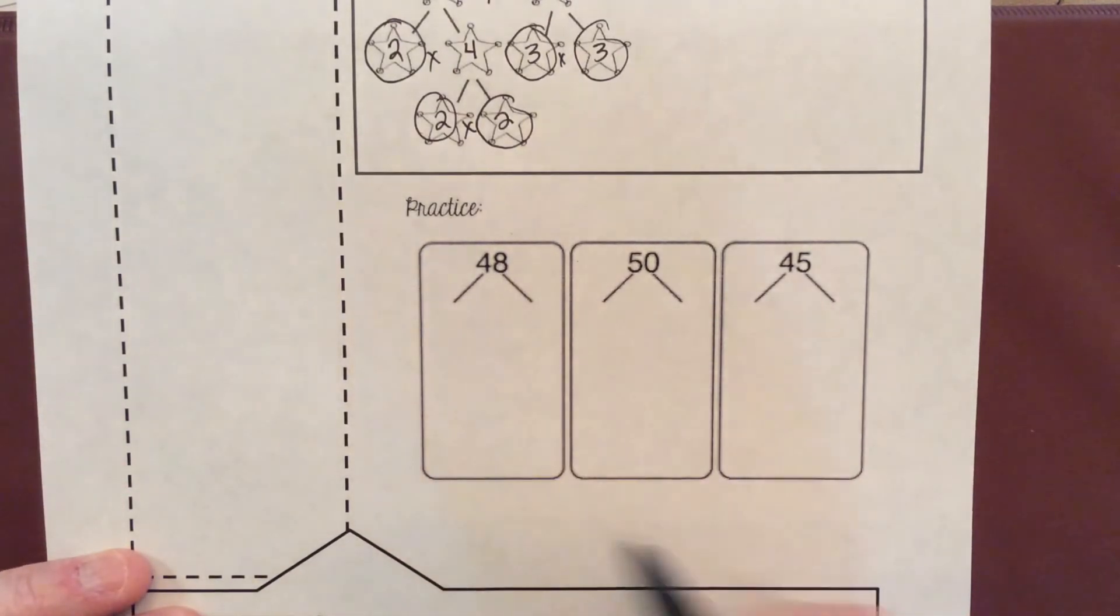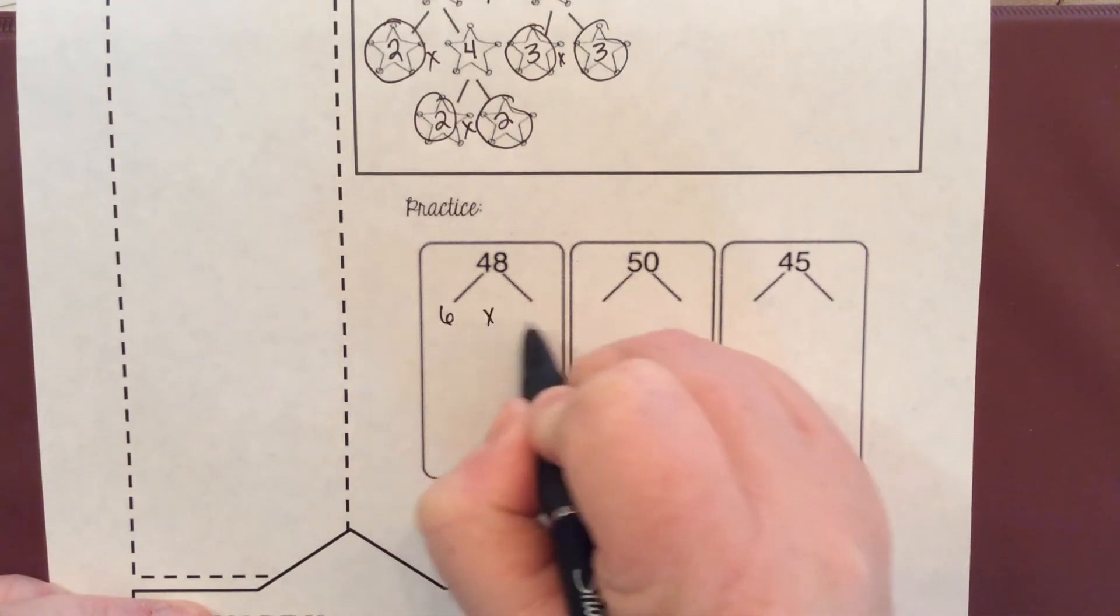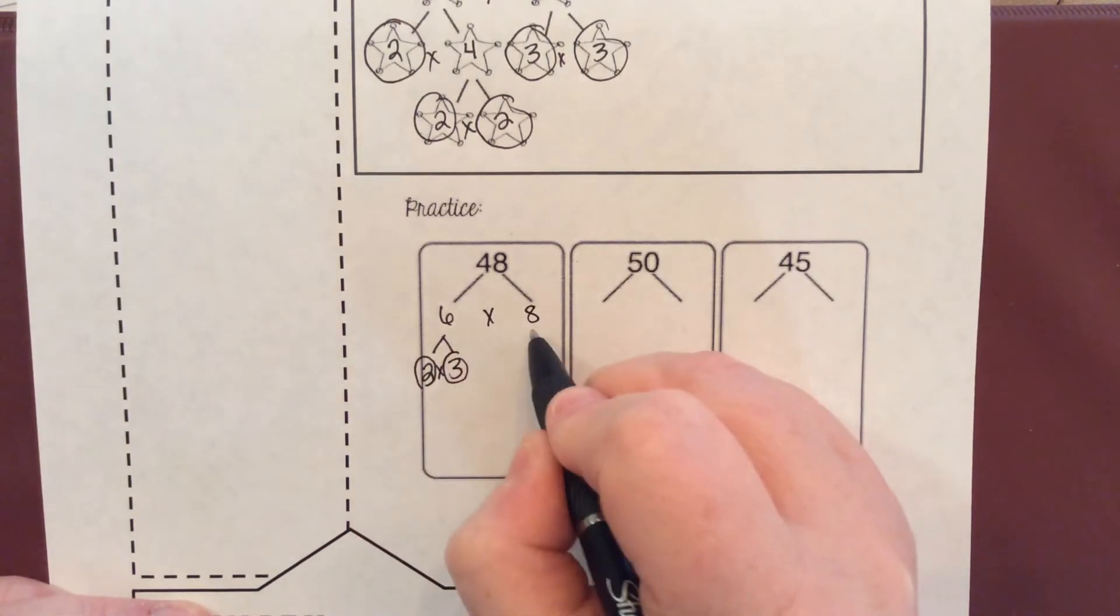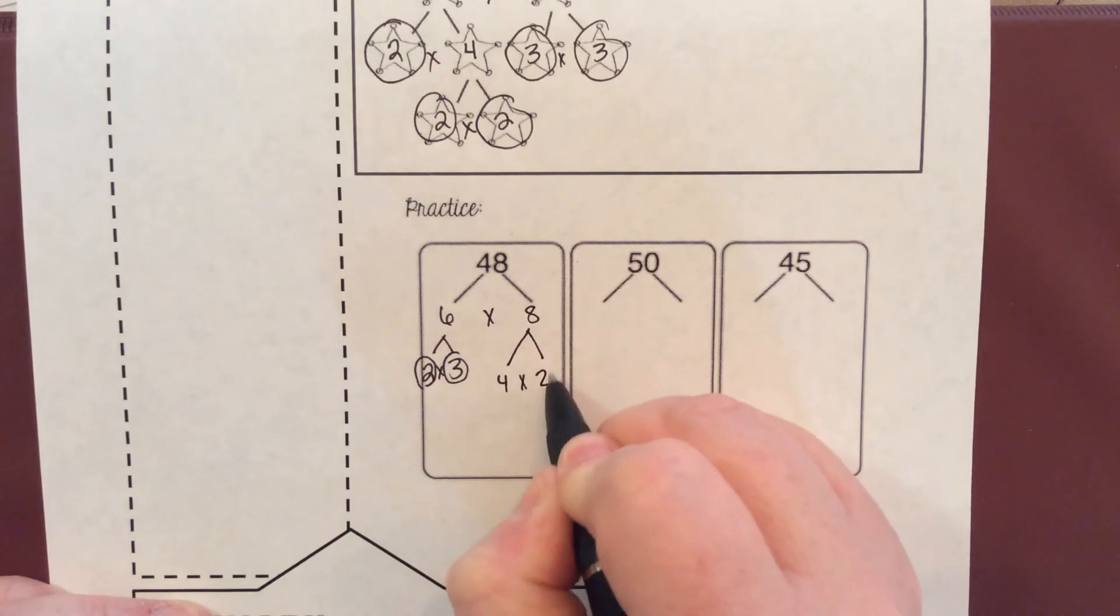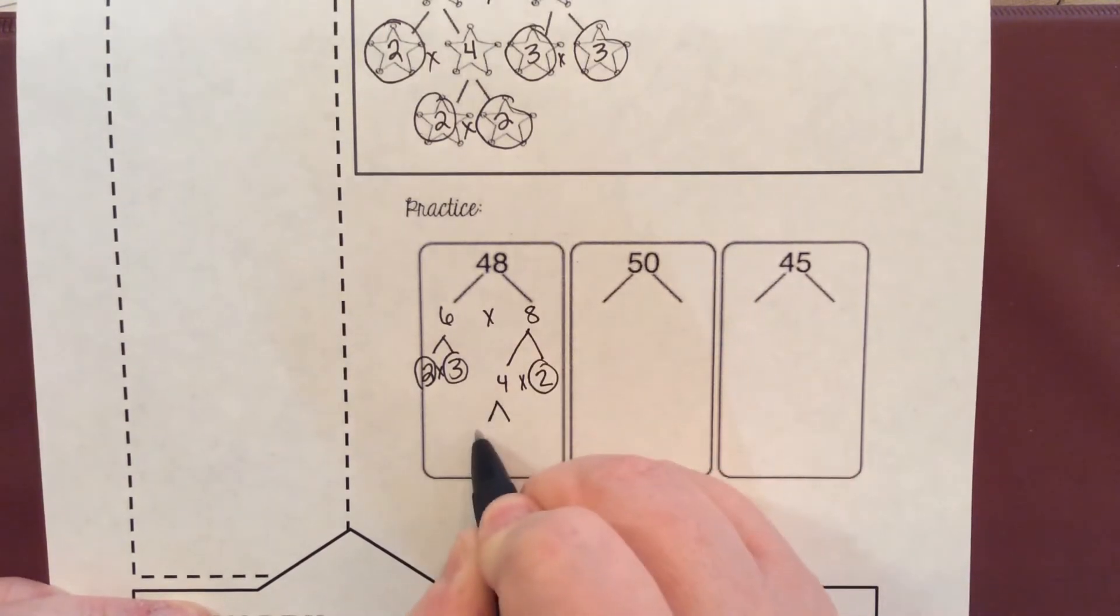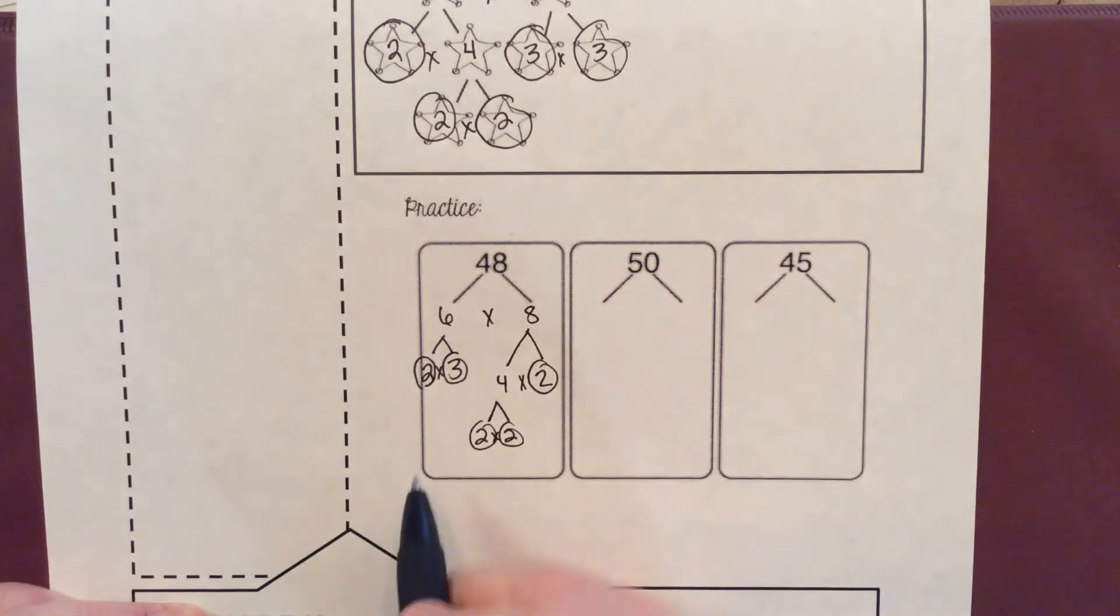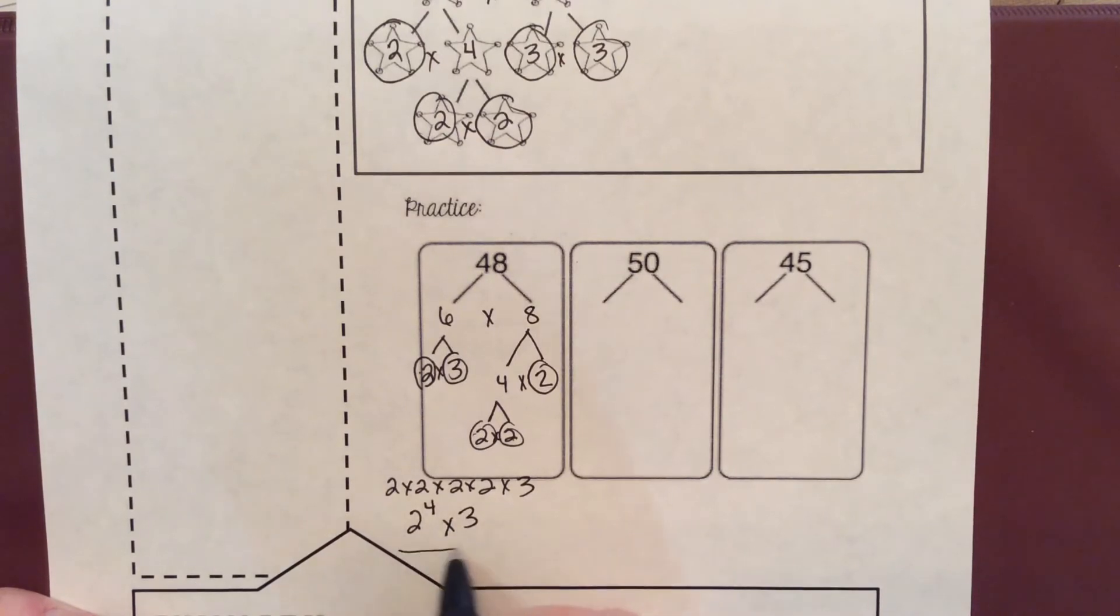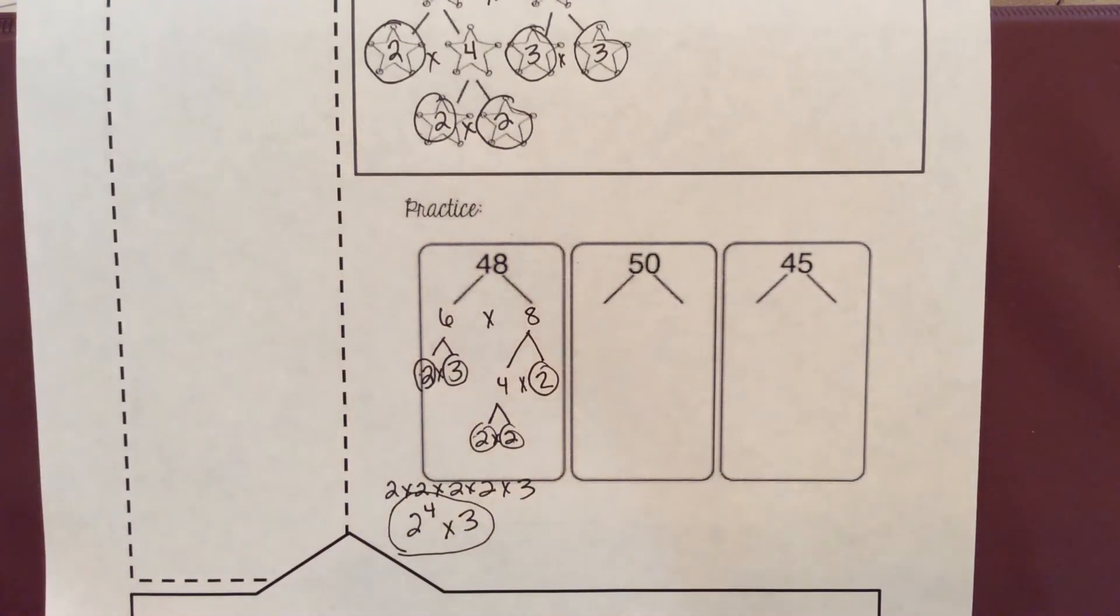Okay, now 48, what do we want to choose? I think six times eight sounds pretty good. Six times eight is 48. Six is made up of two times three, and they are both prime. Eight is made up of four times two. Two is prime, and four is made up of two times two. So right here, my answer, I'm going to have one, two, three, four twos times a three. So it'll be two to the fourth power times three, and this is your final answer.